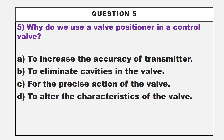Our next question is: why do we use a valve positioner in a control valve? Option A: to increase the accuracy of a transmitter. Option B: to eliminate cavities in the valve. Option C: for the precise action of the valve. Option D: to alter the characteristics of the valve.